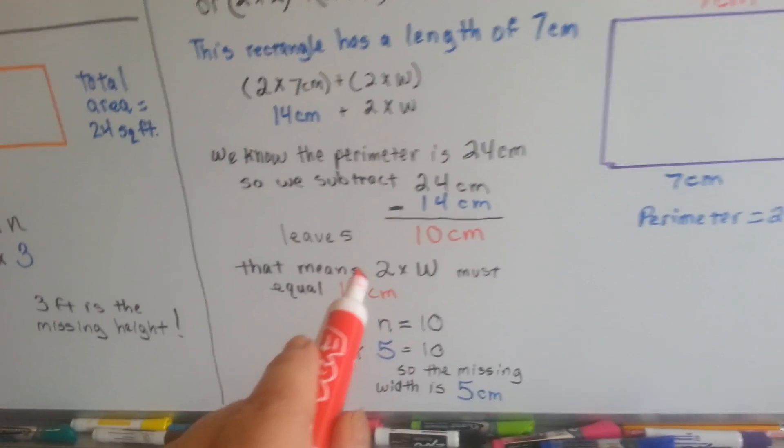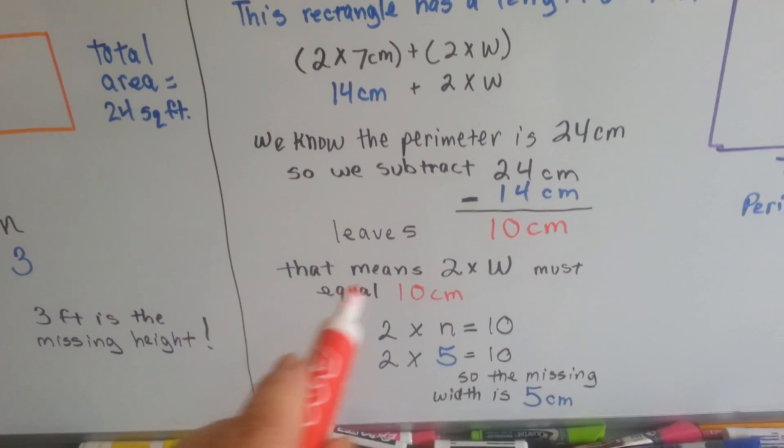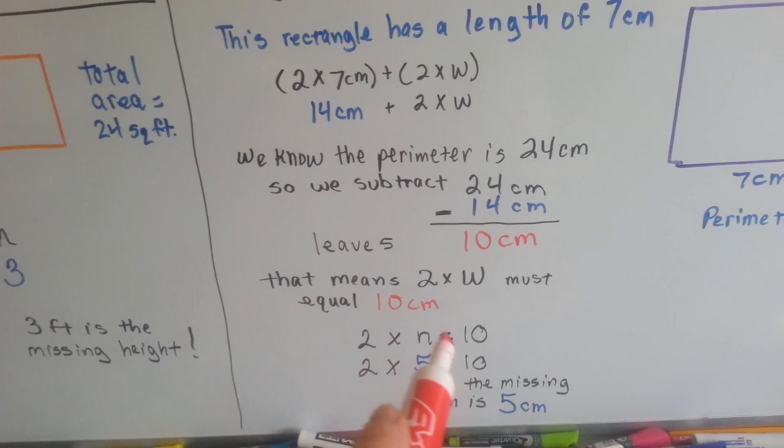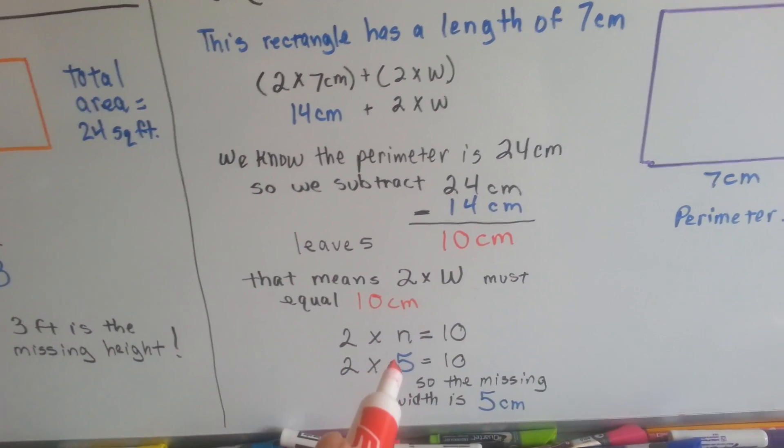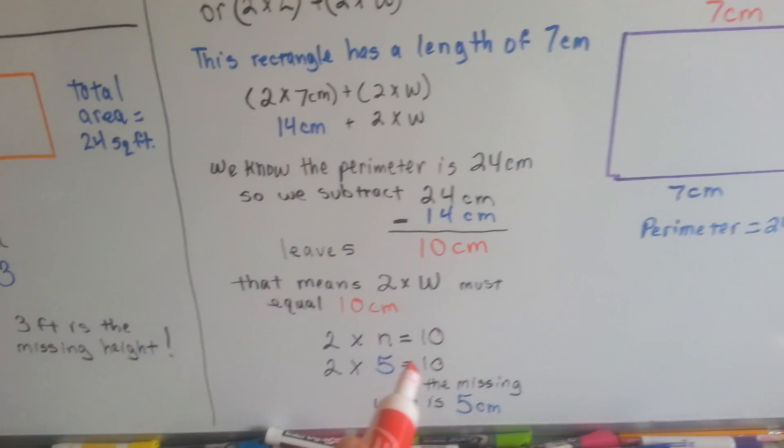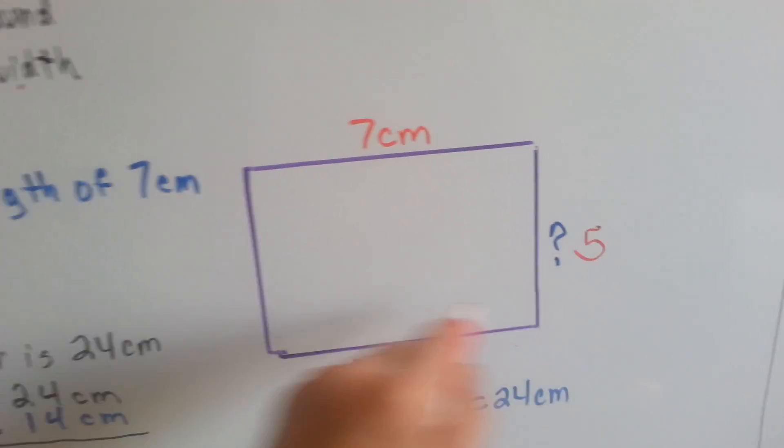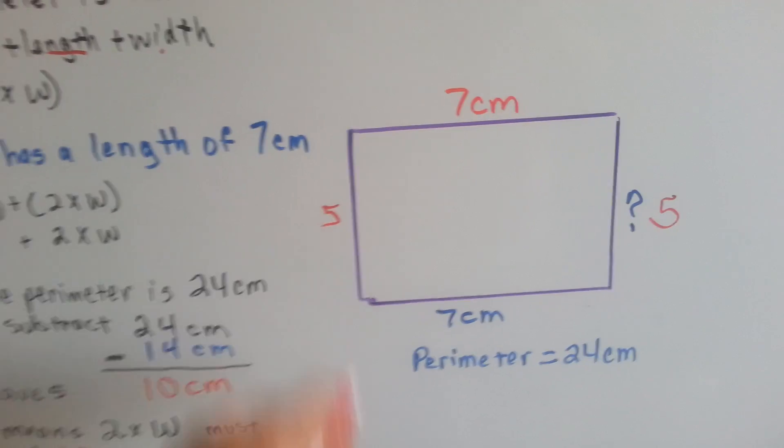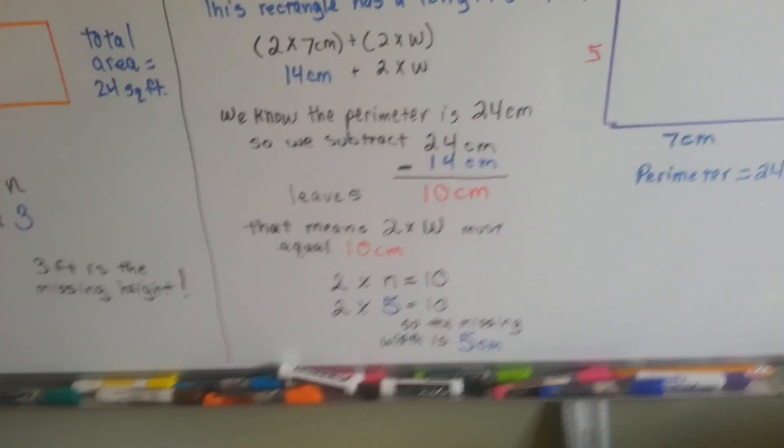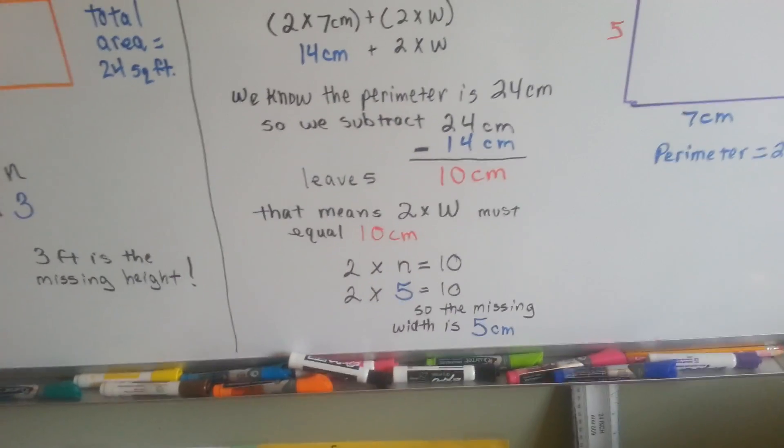So that's the 2 times w. We know they equal 10 centimeters. 2 times n equals 10. 2 times 5 equals 10. So we know that this missing side is 5 because 2 of them have to equal the 10. So the missing width is 5 centimeters.